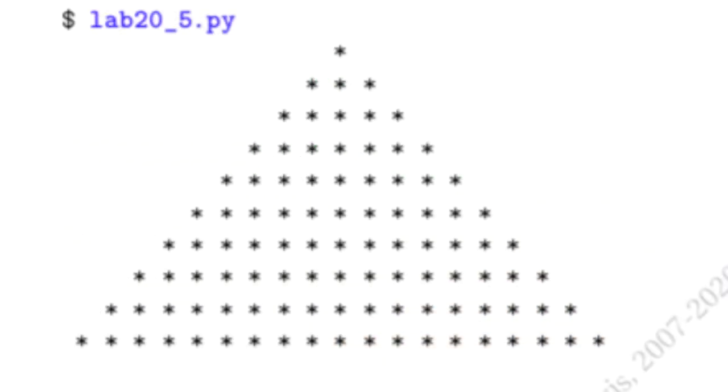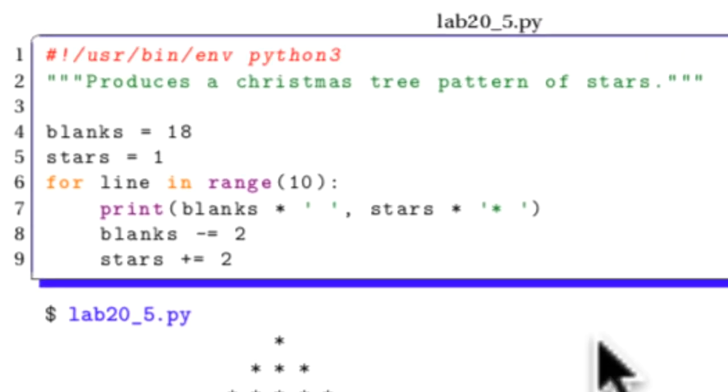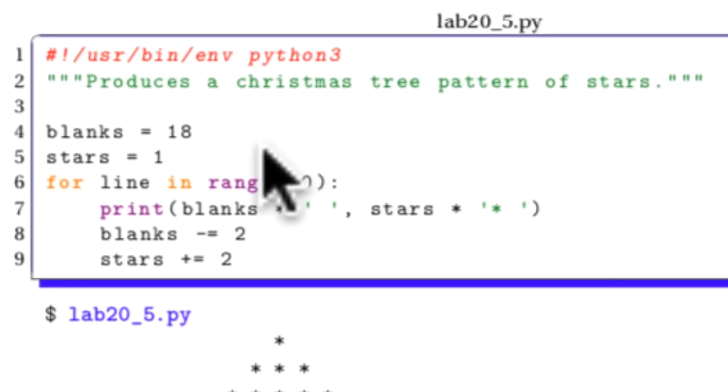Well, maybe you had the time and energy to do 20 underscore five, where you made this Christmas tree pattern of stars. I'll show you how I did it. If you did it in a way that is more readable, you did a better job. If you did it in a way that is less readable, more compact, not a good idea in Python. You're going for readability.